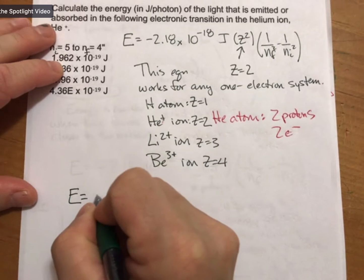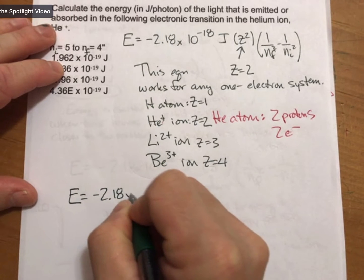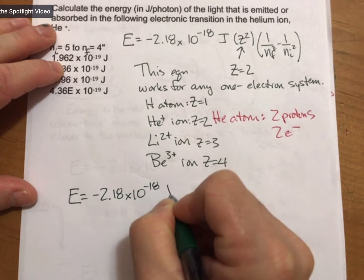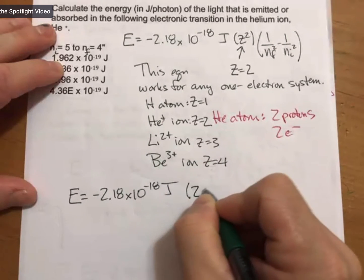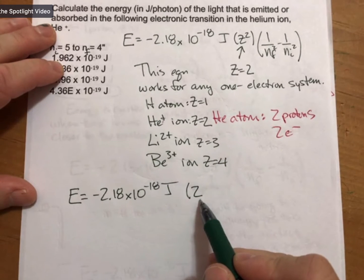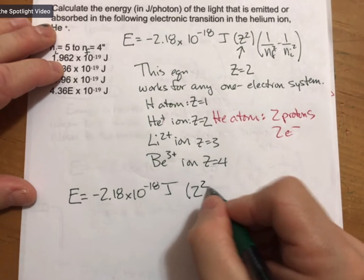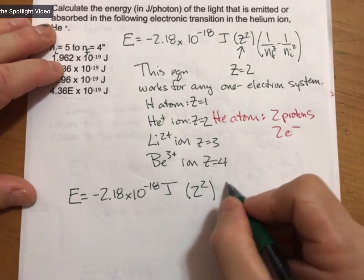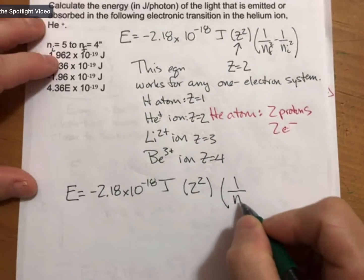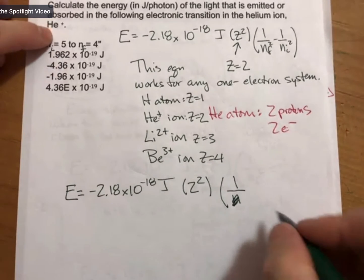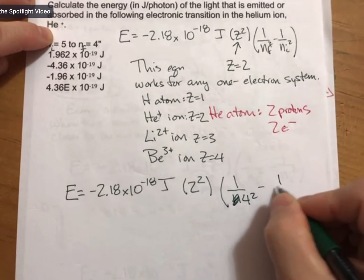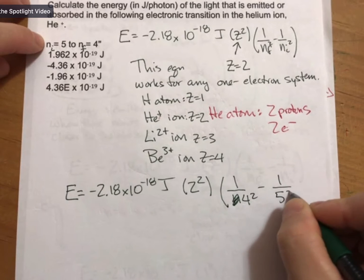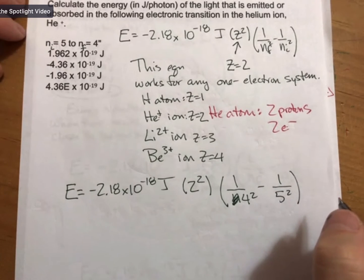Now to actually plug in. Now that's a 2 because it doesn't have the little z in the middle, the little line. And our n final is 4. And our n initial is 5, and we square those.